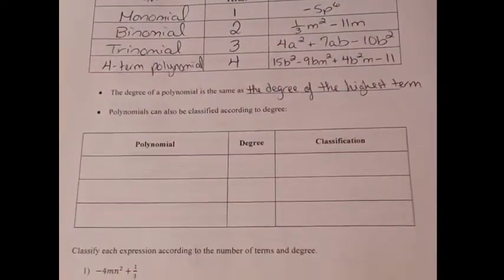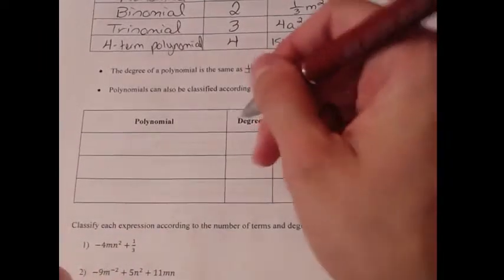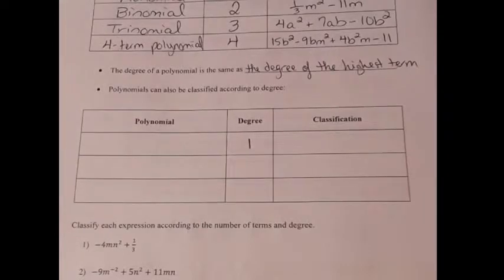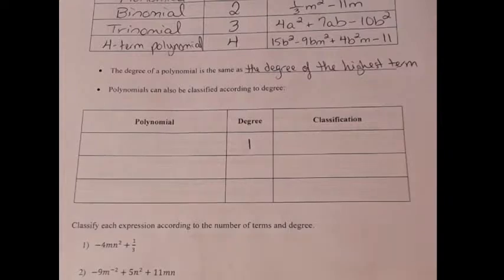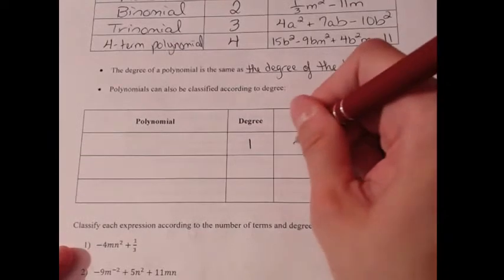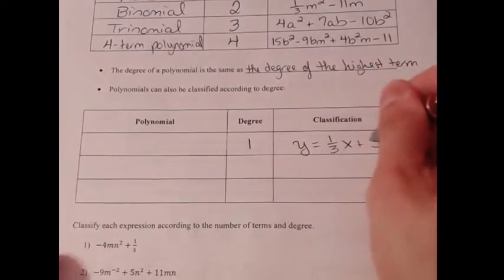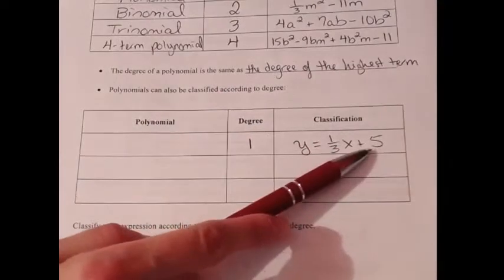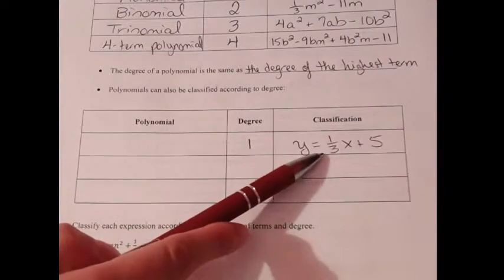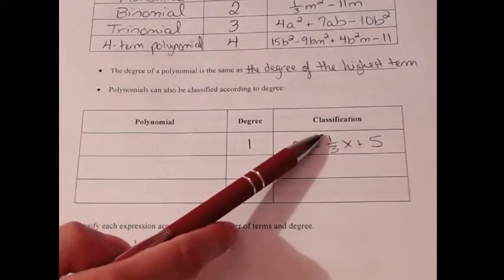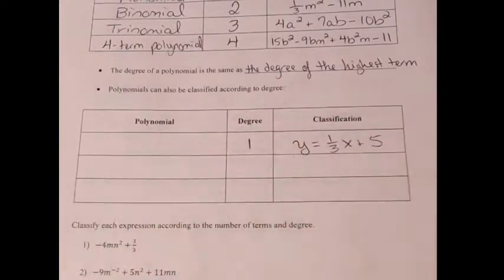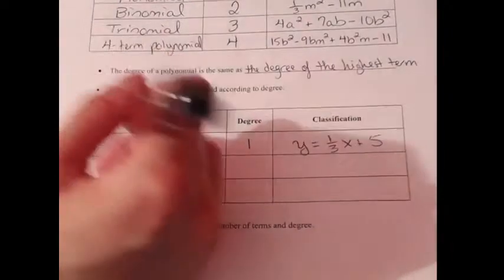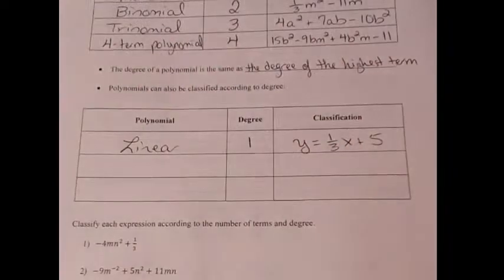Polynomials can also be classified according to degree. Degree one: for example, y equals one-third x plus five. You know what that looks like — it's a line with y-intercept at (0, 5) and slope one-third. So a degree-one polynomial is classified as linear.